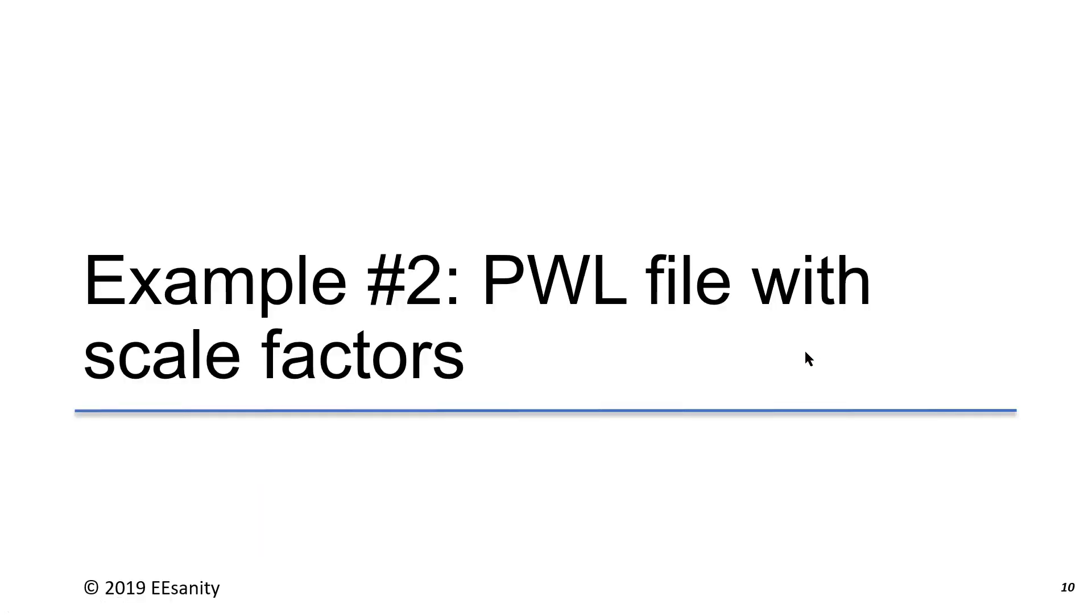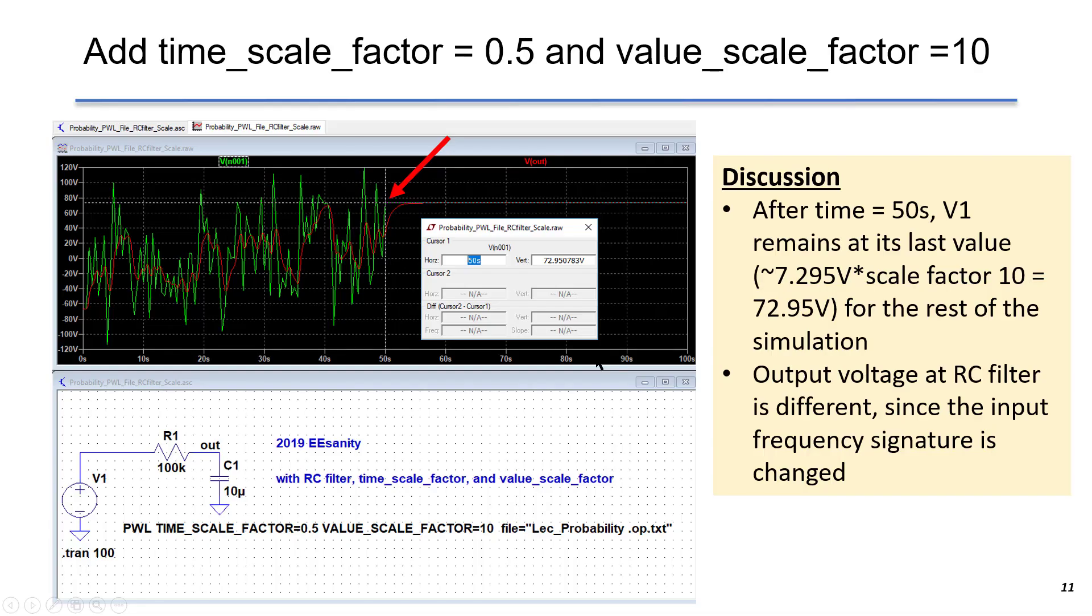Here is the second example. We use the same PWL file, but we add scale factors here, which is a very convenient syntax. In this case, we add time scale factor as 0.5 and value scale factor as 10. That means the time is shrinked from 100 seconds to 50 seconds, and the value is increased by 10 times. We put the PWL syntax here and we call the same file name.